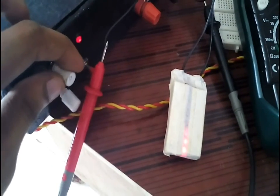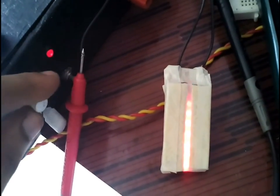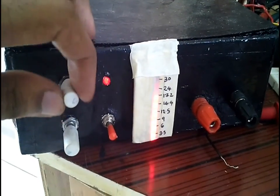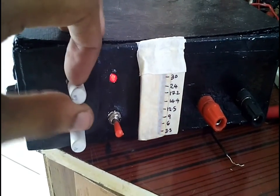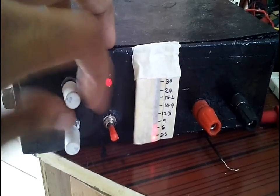This voltage indicator can be used as a separate module to measure voltages or can be embedded in variable power supplies. The various voltage ranges can be calibrated using a multimeter and marked on the voltage indicator like this.